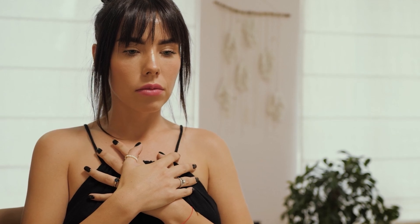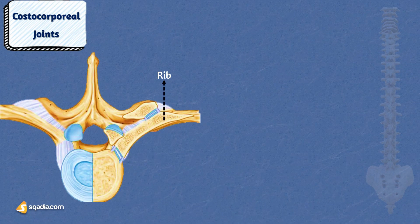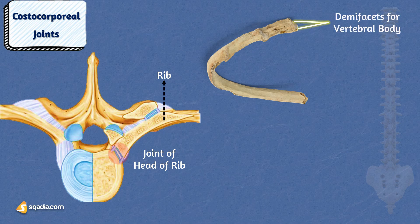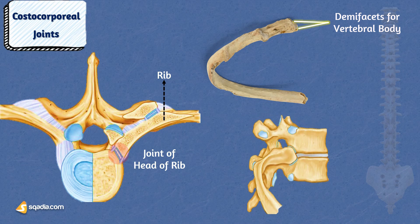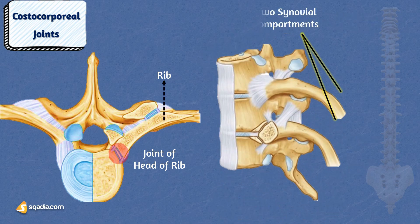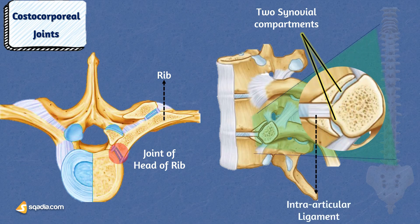Let's delve into the fascinating world of costocorporeal and costatransverse joints. Costocorporeal joints, also known as joints of heads of ribs, are found in typical ribs. Each rib head has two convex articular facets, also called the demofacets. The superior one connects with the body of the vertebra above, and an inferior facet articulates with its corresponding vertebra. The costocorporeal joint consists of two synovial compartments.